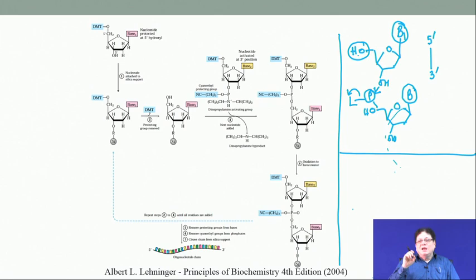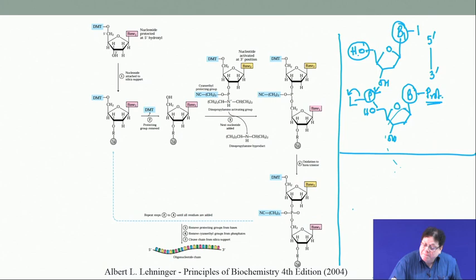You have to protect these amines. Thymine does not have any free NH2, so it does not need any protection. So you also need to use protected bases except for thymine. This makes oligonucleotide synthesis a little bit more complicated than peptide synthesis.